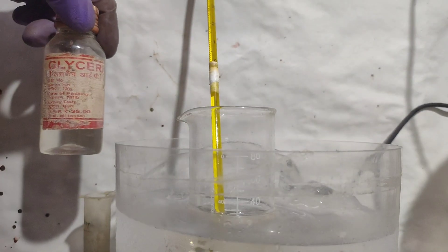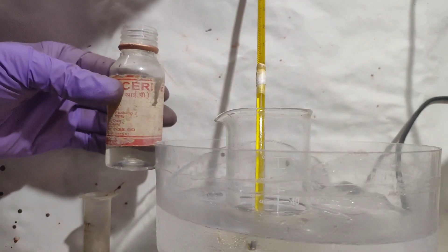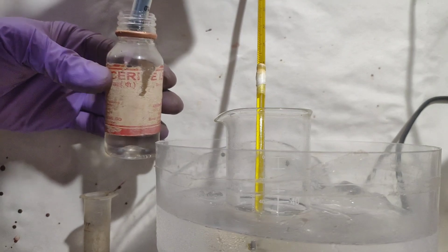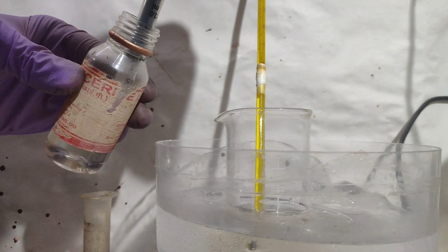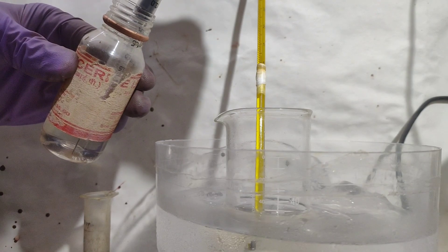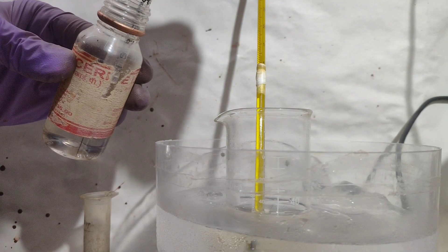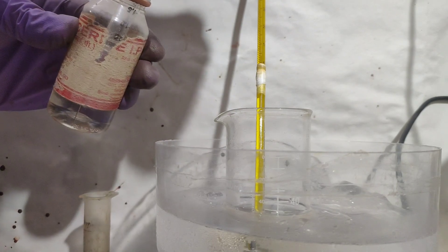Then I took 3 ml of glycerin with a syringe. For every 10 ml of nitration mixture, we have to take 1 ml of glycerol. In our case, the volume of nitrating mixture is 20 ml, so I have to add 2 ml glycerol.